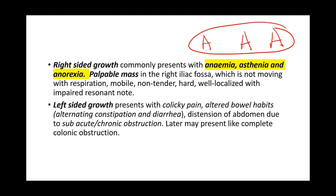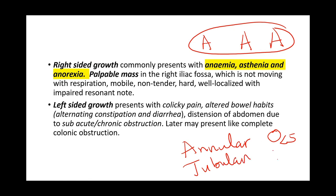Left-sided tumors present with colicky pain, altered bowel habits, and alternating constipation and diarrhea, because left-sided tumors are annular and tubular as mentioned previously — circumferential and less than 5 cm, or tubular and greater than 5 cm. Because of that, they present as constricting and obstructive tumors causing intestinal obstruction, and may later present with complete colonic obstruction.